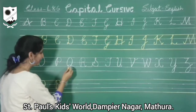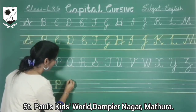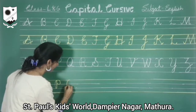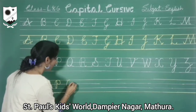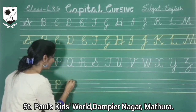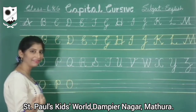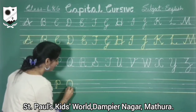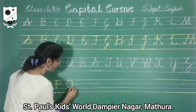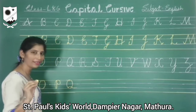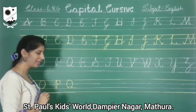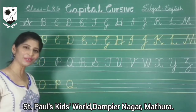Capital Q. We will start from the first line. Round, third line. Again take a big round and leave it. And small loop. Easy way here. Look here. Capital Q.